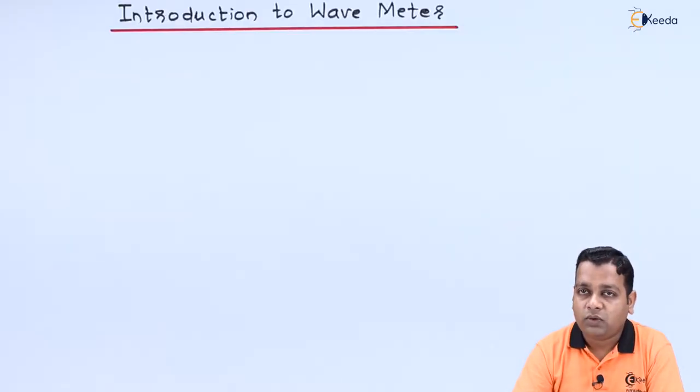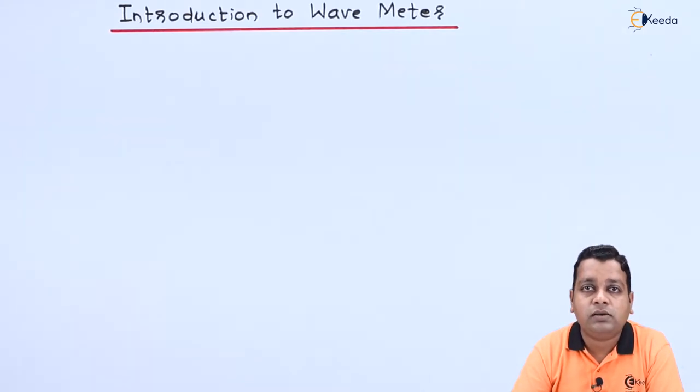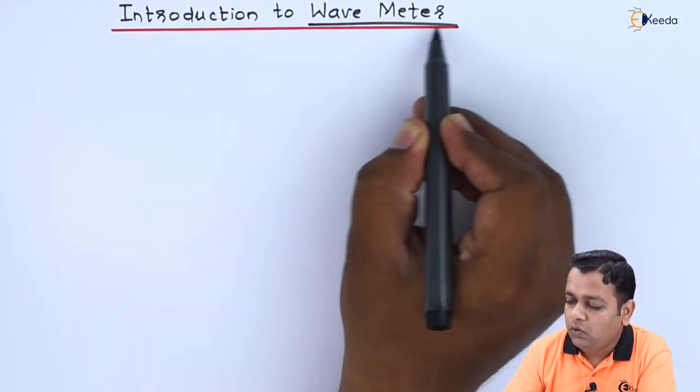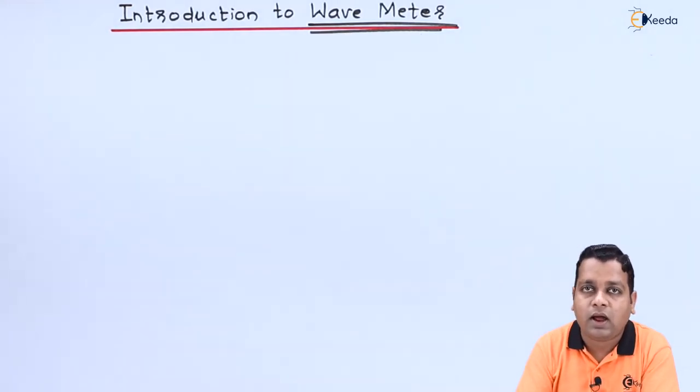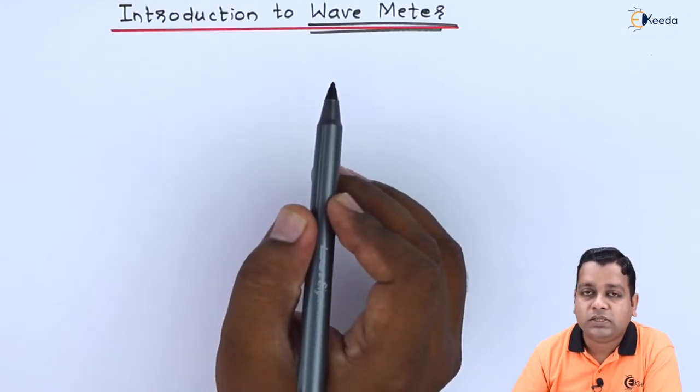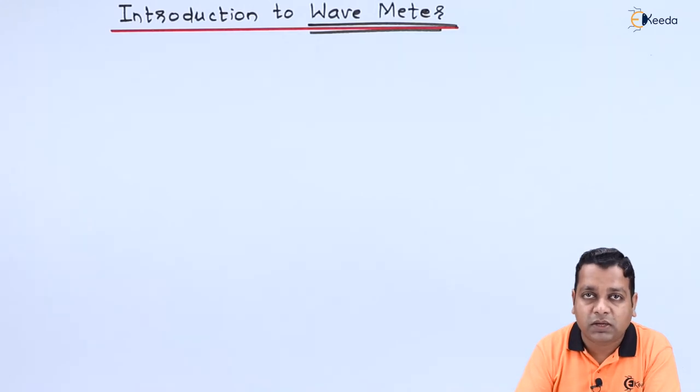So here we start with our topic called as introduction to wave meter. Whatever the mechanical type of the frequency measurement technique we have reported in the previous lecture is basically of the form that is used in the wave meter. The operation of the wave meter we have already addressed in some terms for the measurement of the frequency. So the purpose of wave meter inside the microwave test bench is to measure exactly the frequency at the resonance. Now we shall discuss a simple schematic diagram.